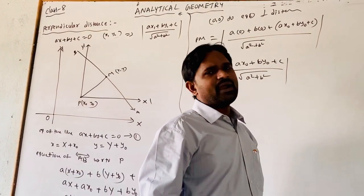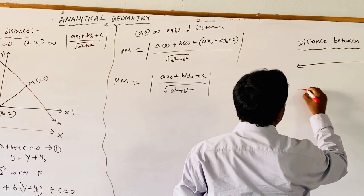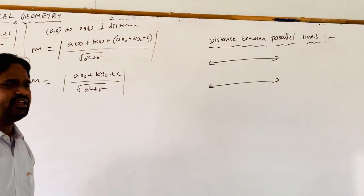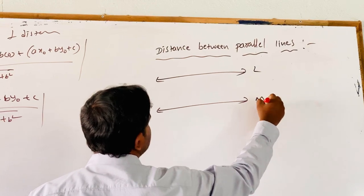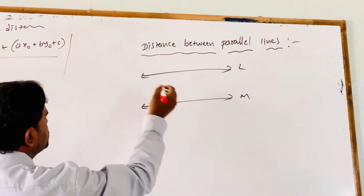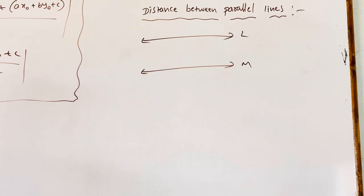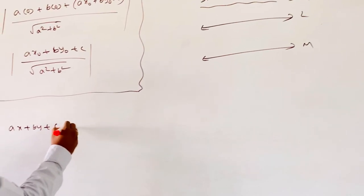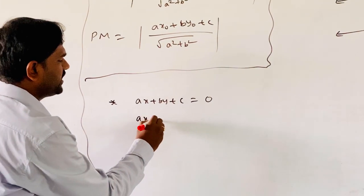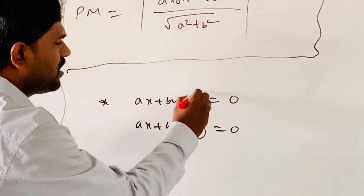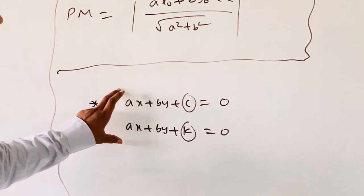The next topic is the distance between parallel lines. Parallel lines are two lines that are equidistant at any point in the plane. Consider L and M as two parallel lines. If the two lines are parallel, the general form shows that AX plus BY plus C equals 0 is a line, and a line parallel to it is AX plus BY plus K equals 0 — only the constants differ, while the X and Y coefficients are the same.